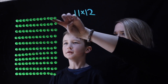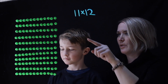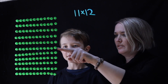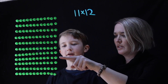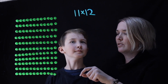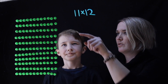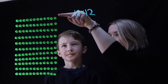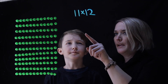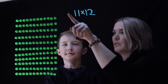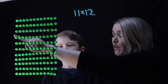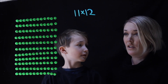So there's 12 in each row, and there's 1, 2, 3, 4, 5, 6, 7, 8, 9, 10, 11. So 12 going this way and 11 going this way. To figure out 11 times 12, we have to figure out the total amount of dots there.